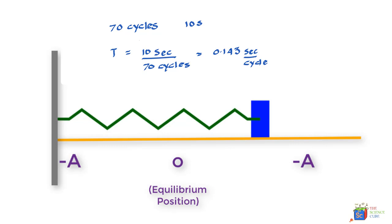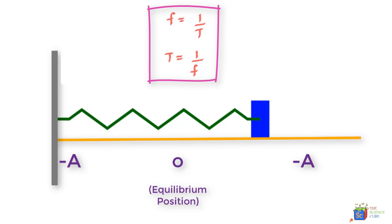So you would have noticed that the relationship between frequency and time period is reciprocal, or F is equal to one upon T, or we could also say that T is equal to one upon F.